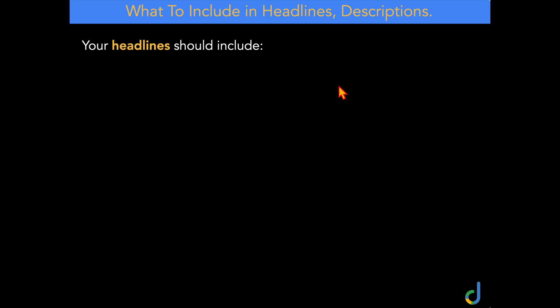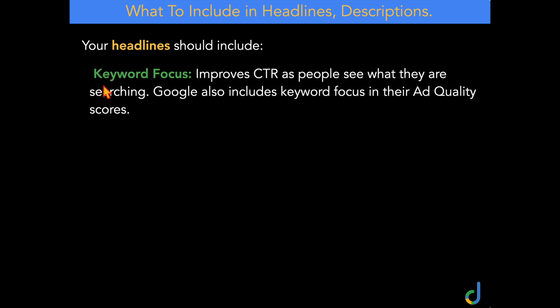Your high priority focus needs to be on your headlines in your Google Ads copy. Because if people don't see your ad with the headlines and it doesn't grab their attention, they're not going to read the rest of the ad, and more importantly, they're not going to click through to your website. So even with responsive search ads, you need to make sure that your headlines have these four core elements.